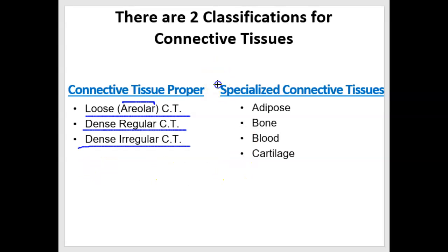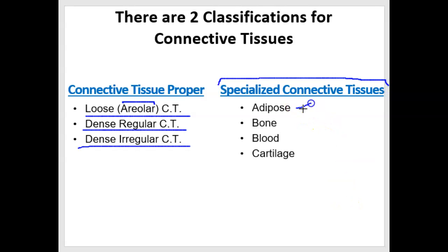The other category, specialized connective tissues, includes adipose, bone, blood, and cartilage. And we'll do those last.